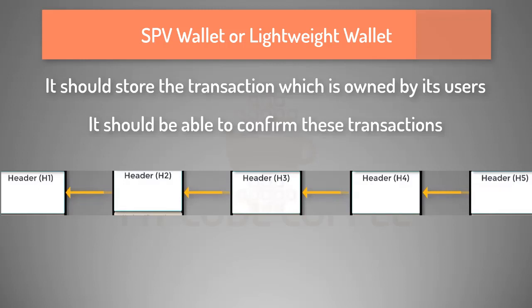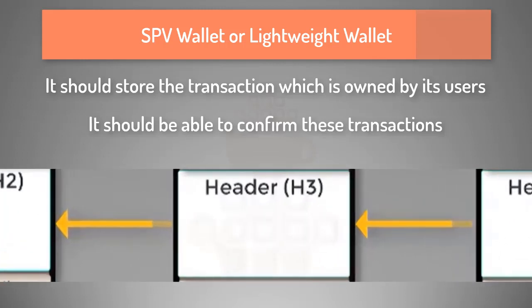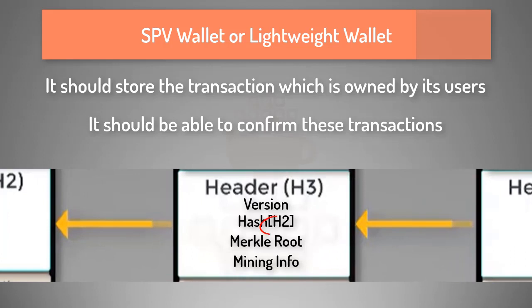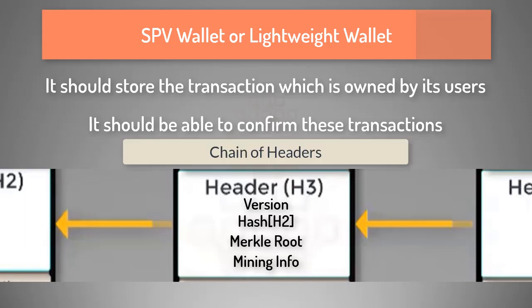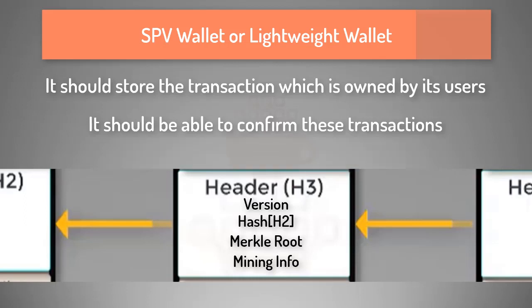If you already know about block structure, you understand that the header of the block contains the hash of the header of the previous block, which is helpful in arranging the blocks in the blockchain, or in other words, it is helpful in forming the chain of blocks. In the case of an SPV node, this is simply the chain of headers of the blocks and not full blocks. You also know that the header of the block does not contain transactions.